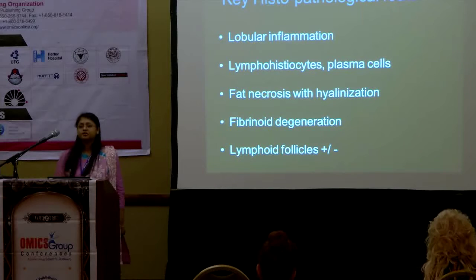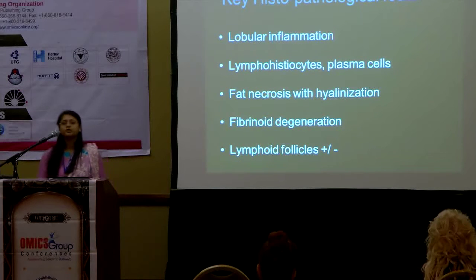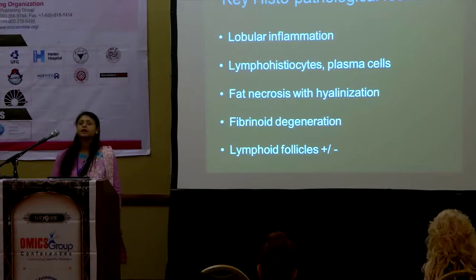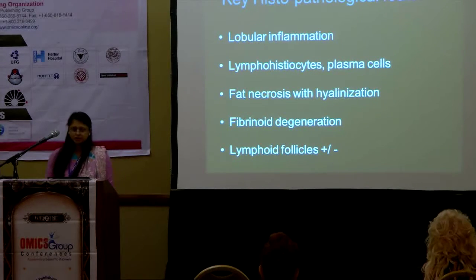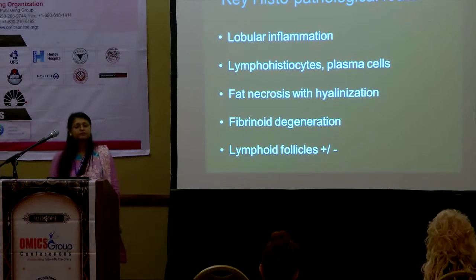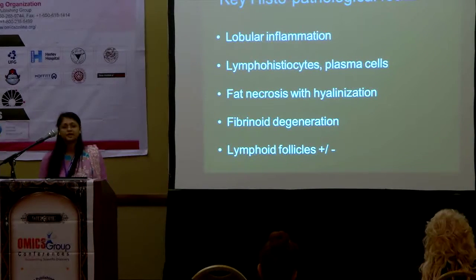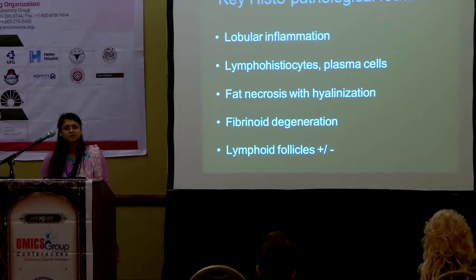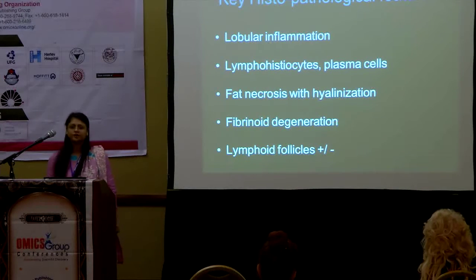The most diagnostic feature of lupus profundus is histopathological examination. Key histological features include lobular inflammation, lymphohistiocytes with plasma cells, fat necrosis with hyalinization, fibrinoid necrosis, and lymphoid follicles — which are suggestive but not diagnostic, as they have also been found in other diseases like dermatomyositis and morphea.